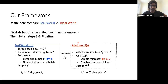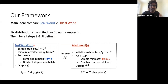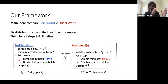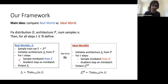The main idea is to compare the real world to what we call the ideal world. Fix a distribution D like ImageNet, fix an architecture, and fix a number of samples. The real world corresponds to actually training a neural net on N samples for T optimizer steps: sample a train set of N samples, initialize an architecture, then for T SGD steps sample a mini-batch from the train set and take a gradient step — reusing the same samples across multiple epochs.